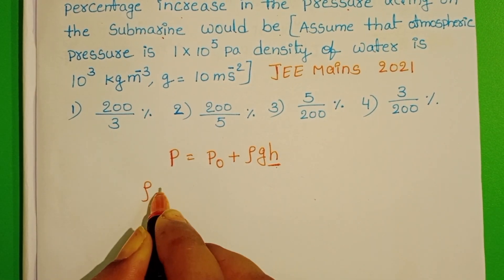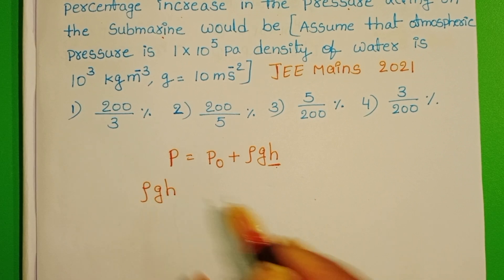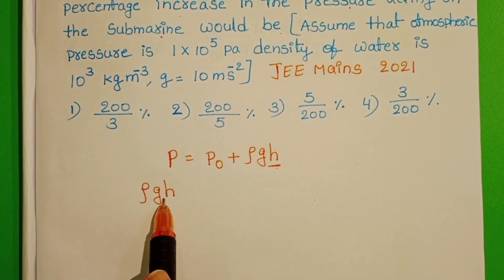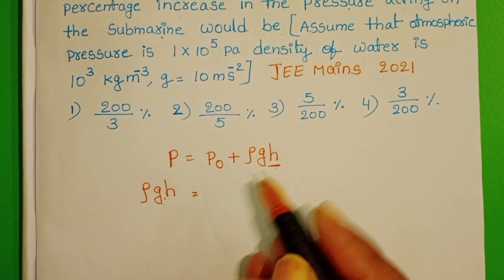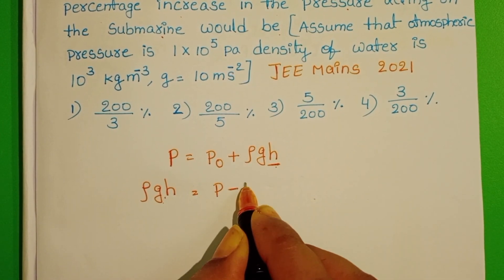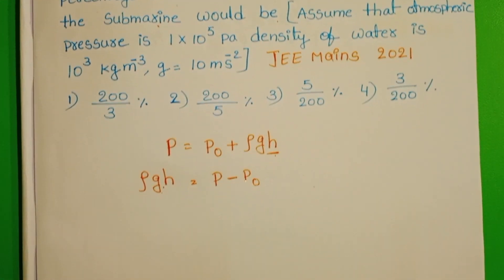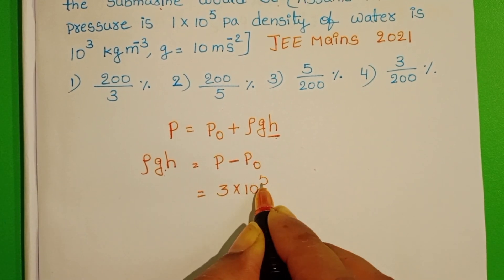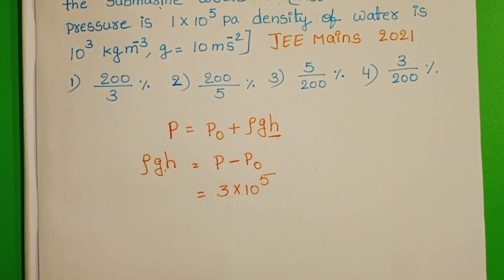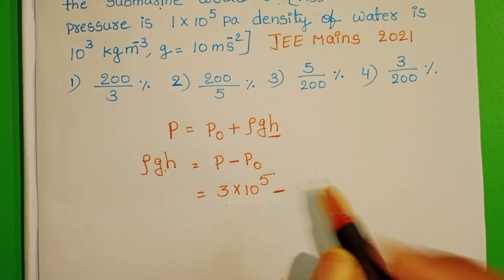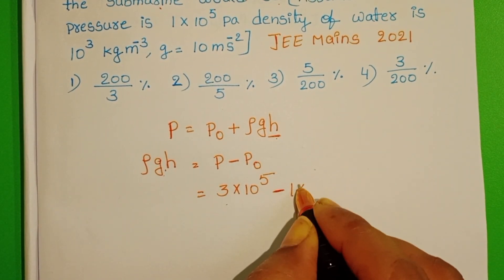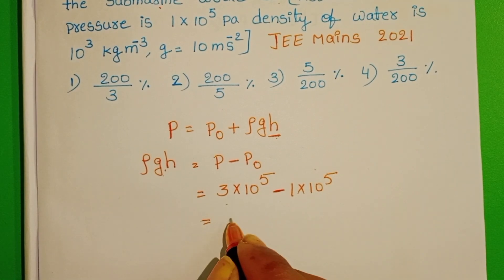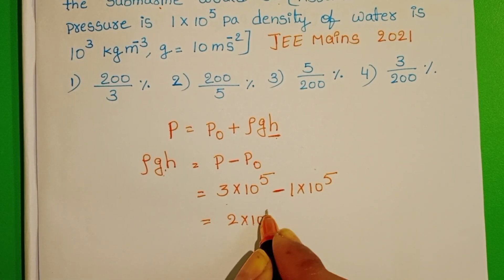First, find out the pressure acting on the submarine due to the fluid: total pressure minus atmospheric pressure. Given total pressure acting on the submarine is 3 × 10⁵ minus atmospheric pressure 1 × 10⁵, which gives 2 × 10⁵ pascal.